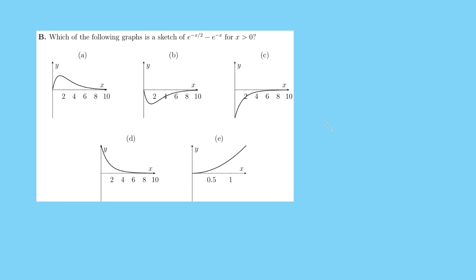Hi, just a quick one from me today. I'm going to be solving this problem from the Oxford University Maths Entrance Test. We want to know which of the following graphs is a sketch of y equals e to the minus x over 2 minus e to the minus x for x positive. We've got five options here.